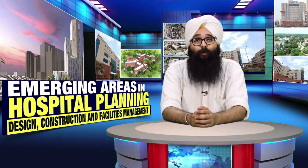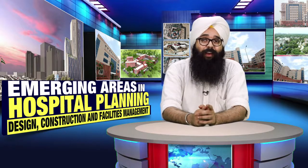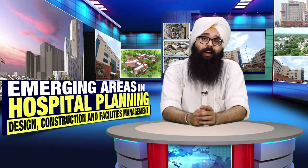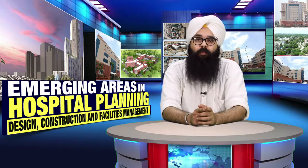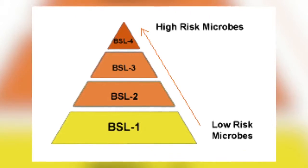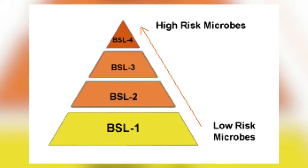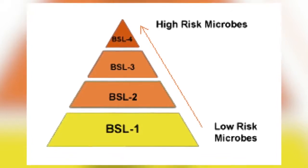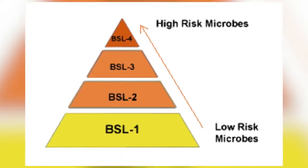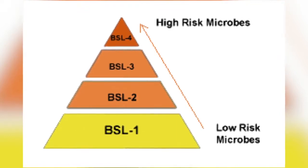There are four biosafety levels. We have studied risk groups, and now we will see that there are biosafety levels: BSL 1, 2, 3, and 4. Biosafety level 1 is for low-risk microbes and biosafety level 4 is for high-risk microbes.